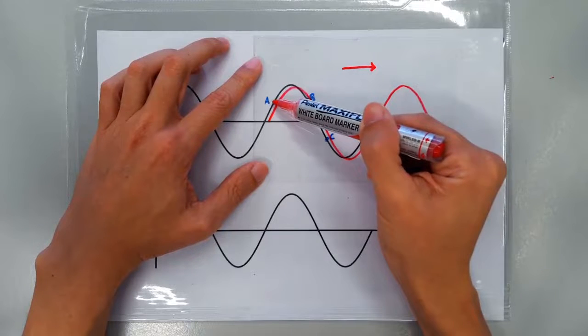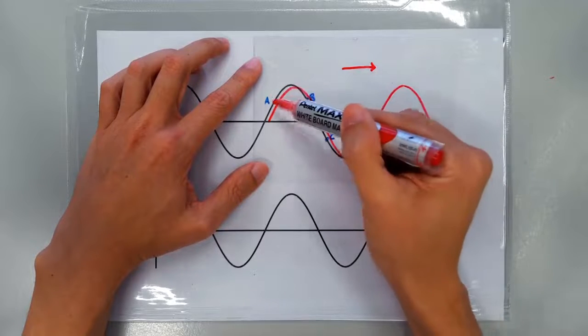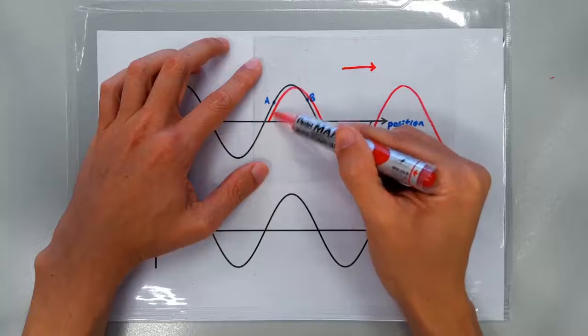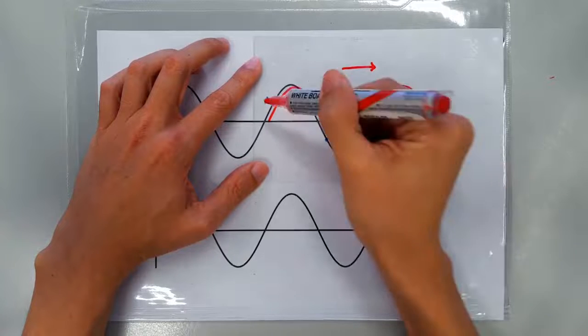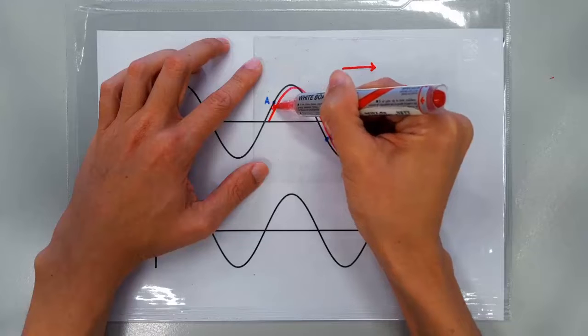So if point A is currently here, then at the next instance, for the wave profile to progress like this, it must mean that point A is on the way down.